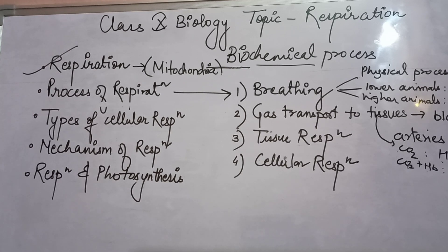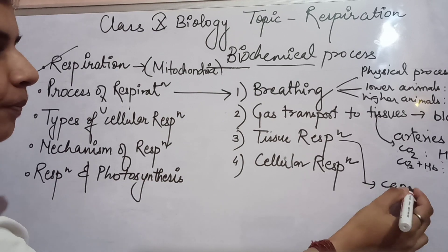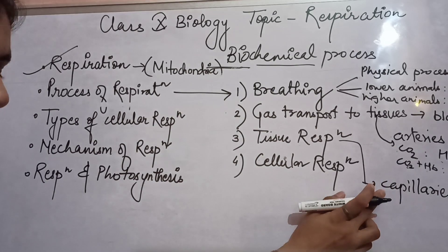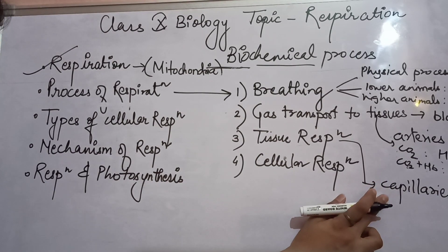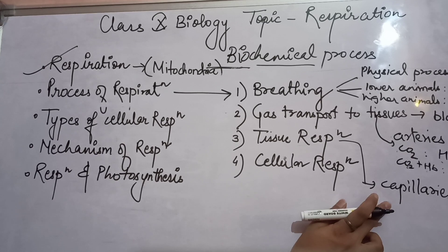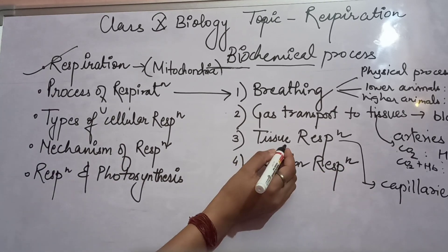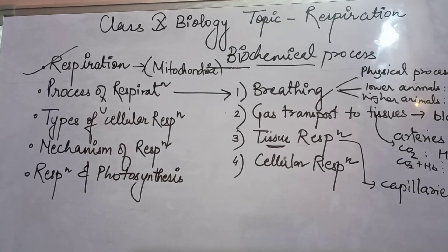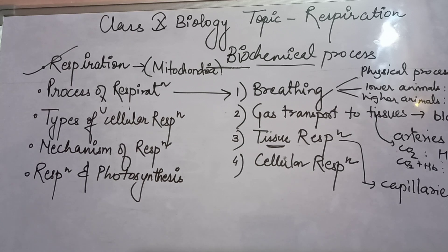The next topic in the process of respiration is tissue and cellular respiration. The arteries that carry oxygenated blood terminate into capillaries, which deliver oxygen to all the cells of the body. Oxygen diffuses through the thin walls of the capillaries into the cells. Similarly, capillaries also pick up CO2 released as waste from the cells. Cellular respiration involves the release of energy by oxidation of food and its conversion into usable forms such as ATP.